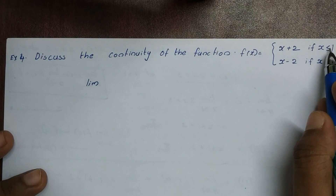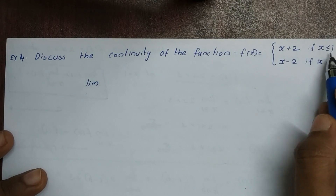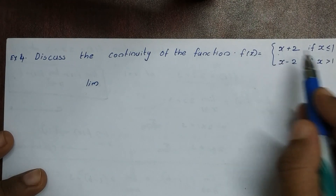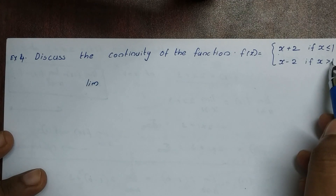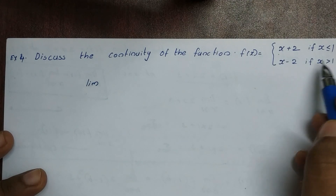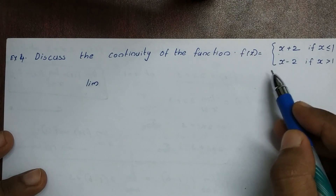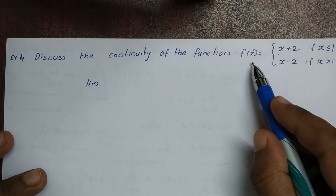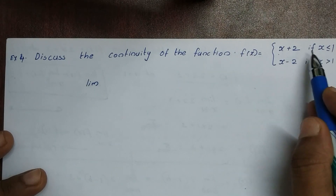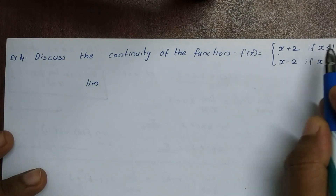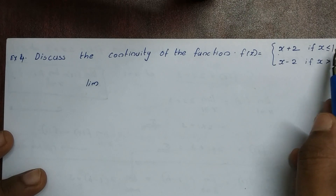If x is less than or equal to 1, then x+2 is the function value. If x is greater than 1, then x-2 is the function value. Now let's check the continuity of the function at x equal to 1.